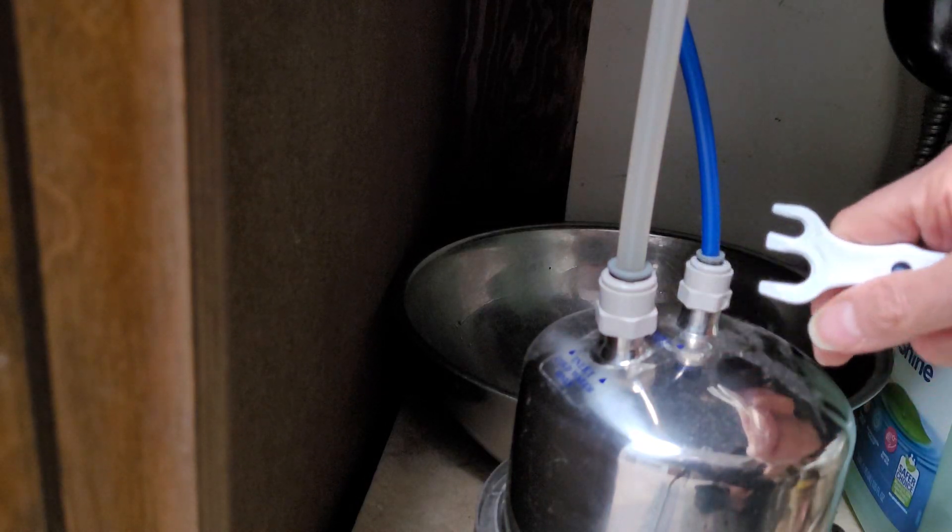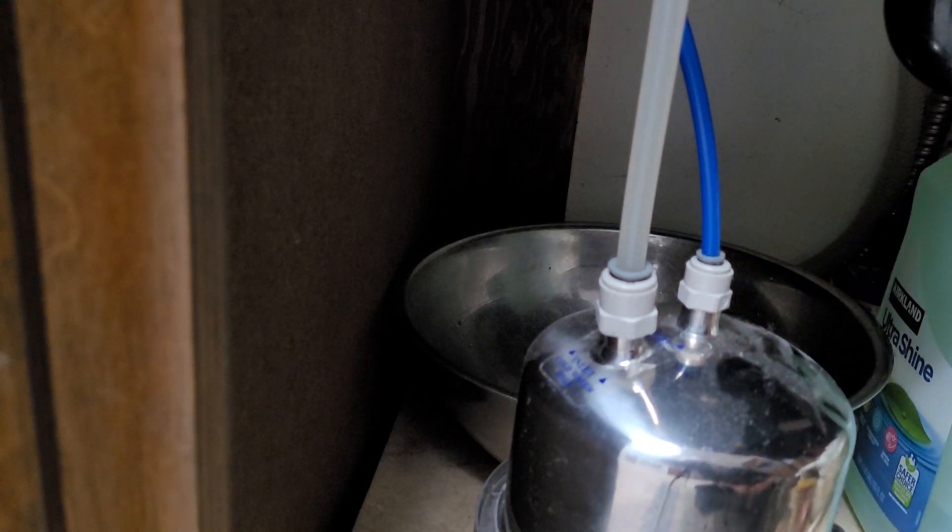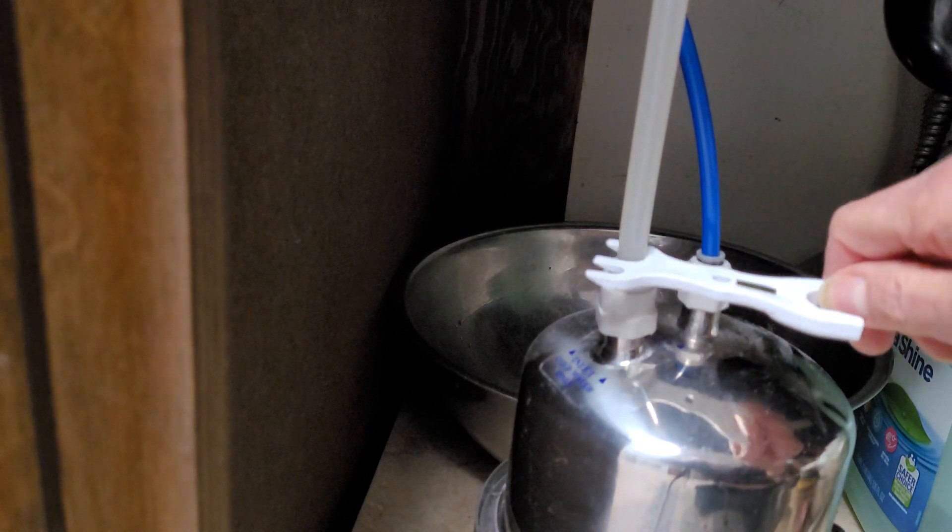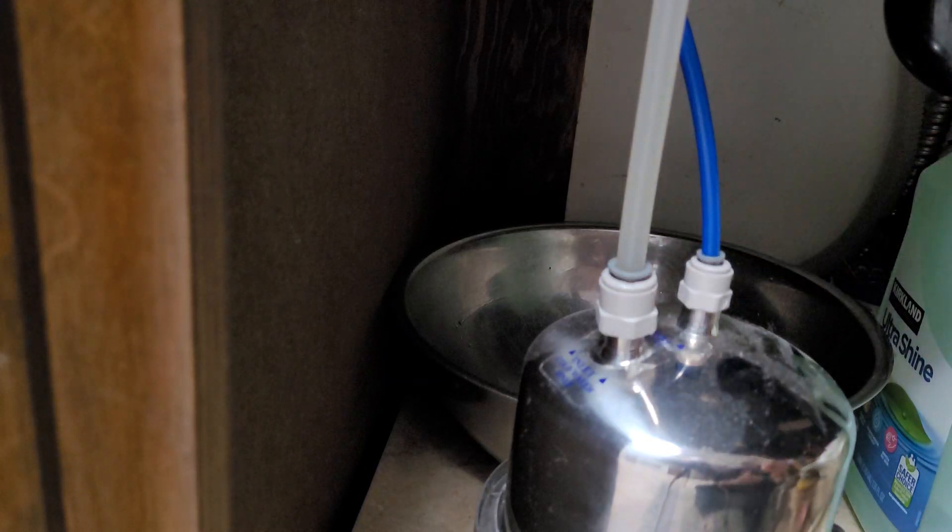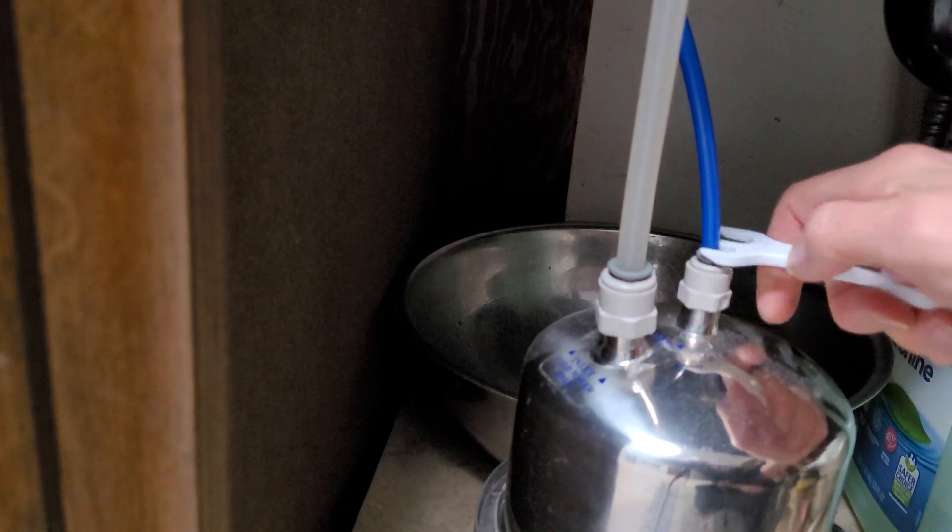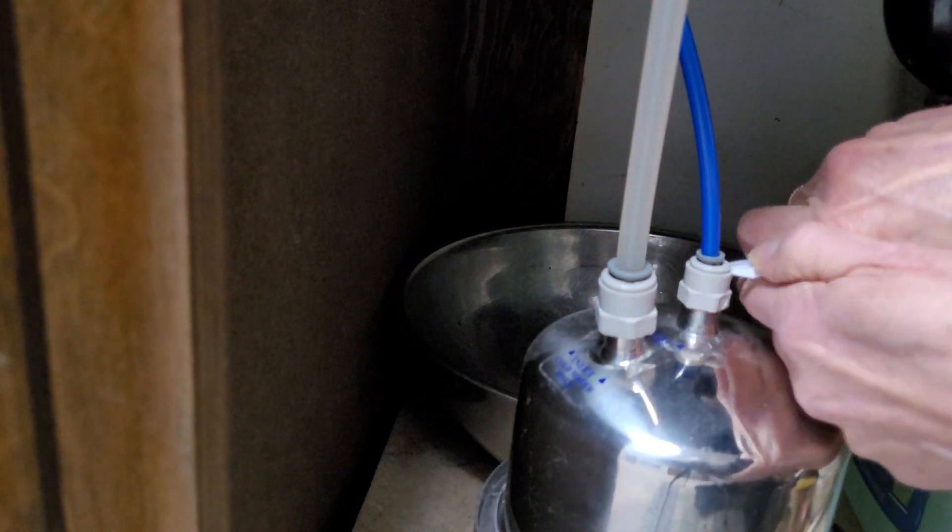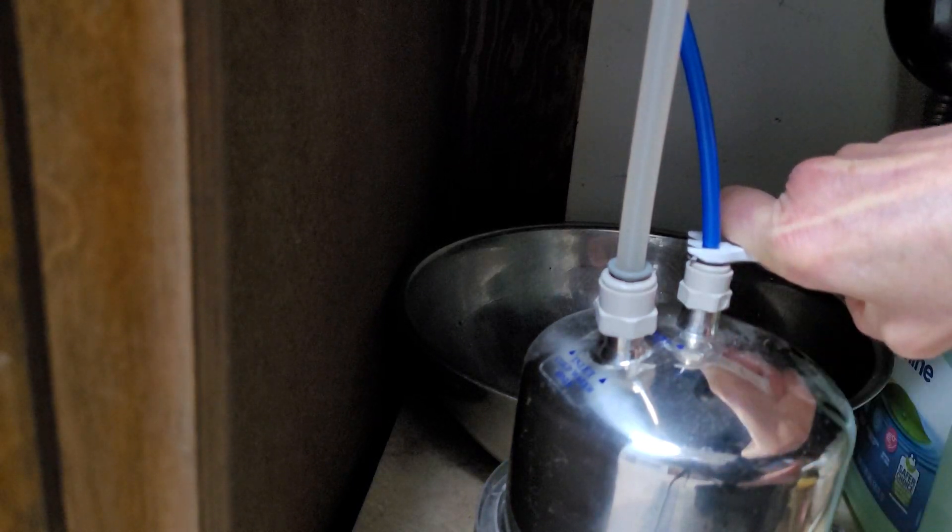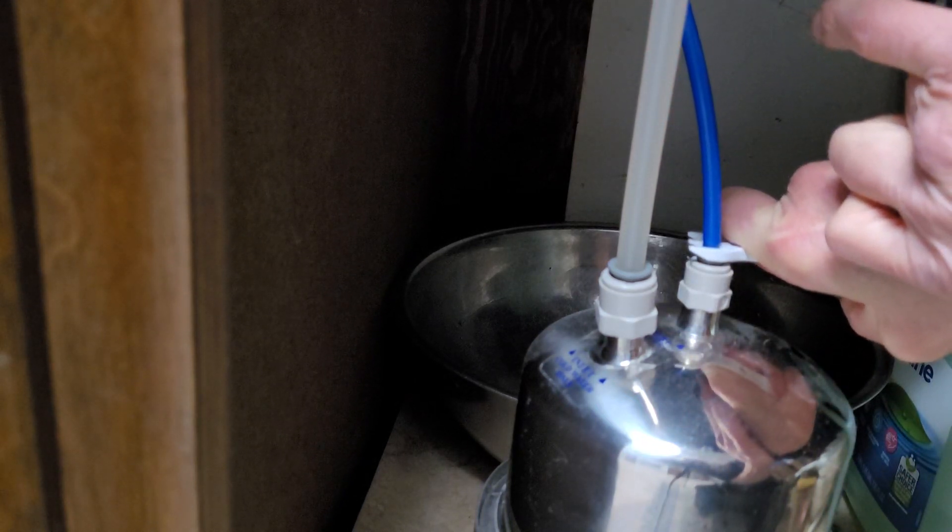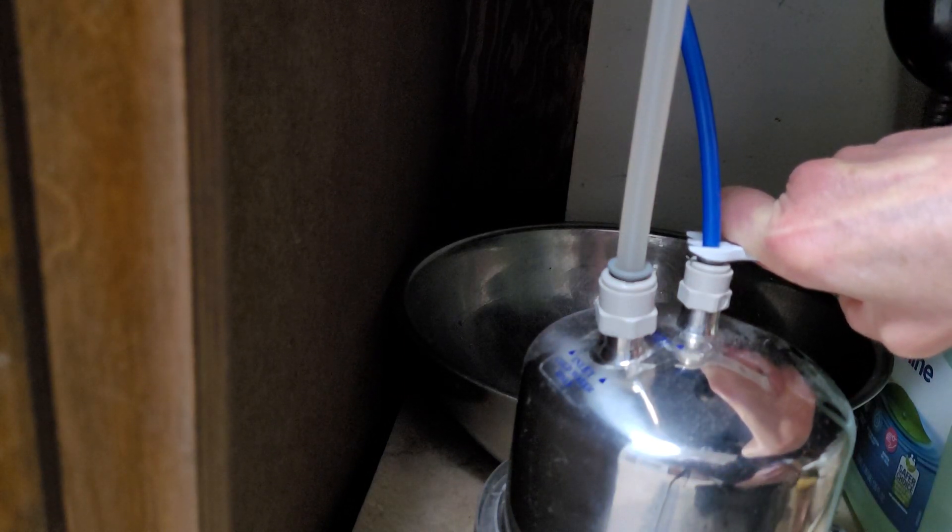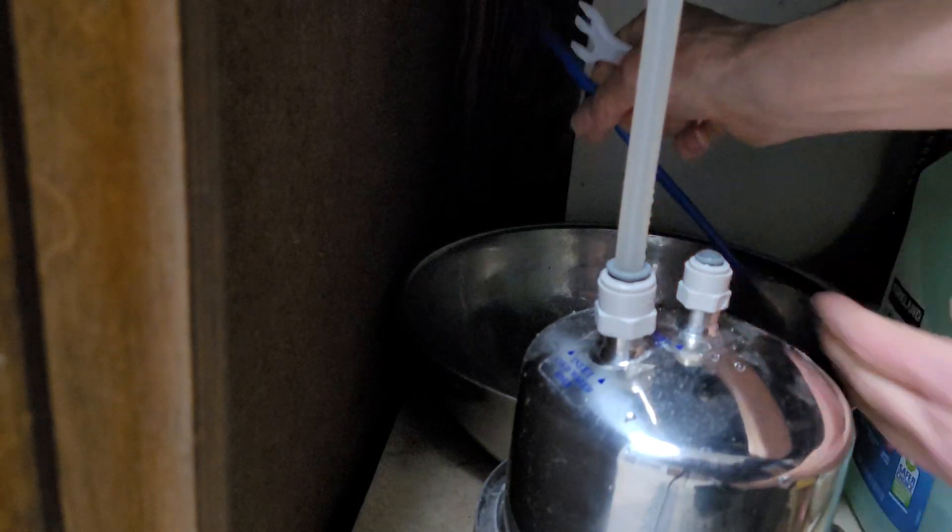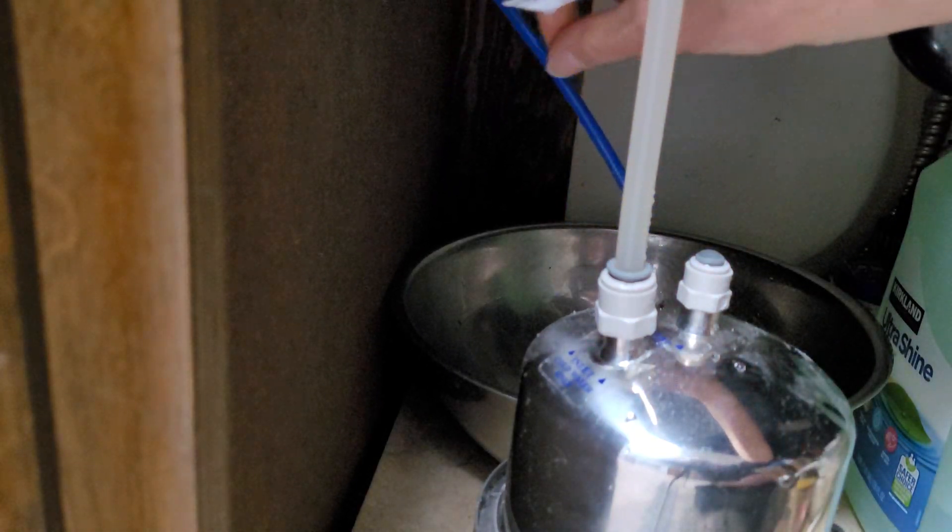Or you might have one of these handy dandy tools that is just great. It's got the large size for the source tubing and then this small one for the faucet tube. We're going to use the small one. You need to push down on that until you hear it click, and then have a dish pan or wide bowl available so that when you pull this out, you can catch the drip.